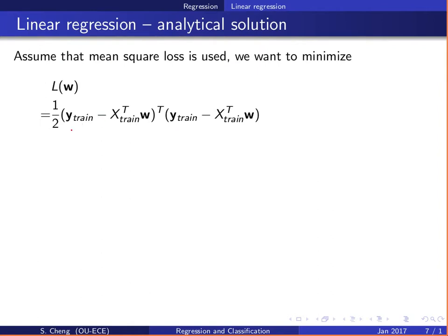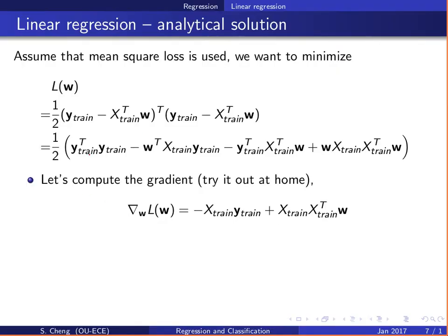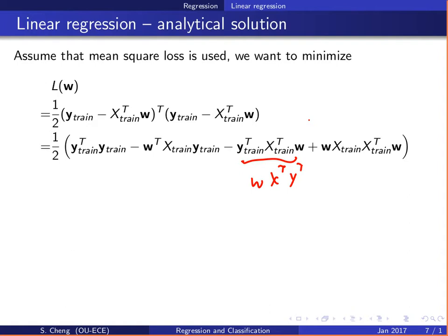These are matrices, not scalars, so you need to be careful: matrix multiplication does not commute. For example, X^T X w is not equal to w X^T X^T in general. So when I take the gradient of the loss with respect to w, I need to be careful about the order of terms.